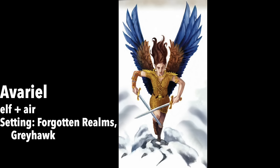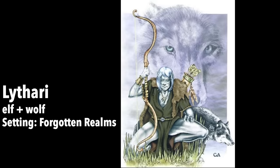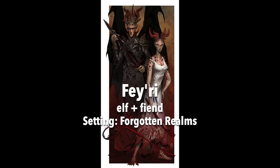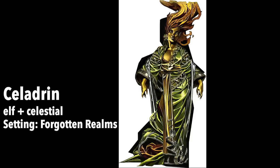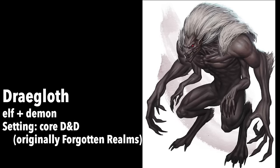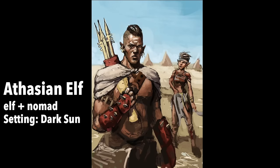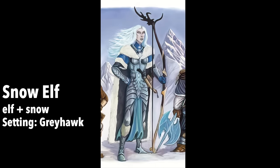Lythari is elf plus wolf — not werewolves, but elves that can shapeshift into wolves, preferring to live away from civilization. Fey'ri is elf plus fiend — the result of elves breeding with demons. Celadrin is elf plus celestial — elves with celestial parentage. Dragloth is elf plus demon — a monstrous creature born of a drow priestess mother and a glabrezu demon father. Fazrael is elf plus nomad — the nomadic and tribalistic elves renowned for their ability to run swiftly and for extended periods. Snow elf is elf plus snow — reclusive, pale-skinned elves dwelling in the crystal mist mountains.